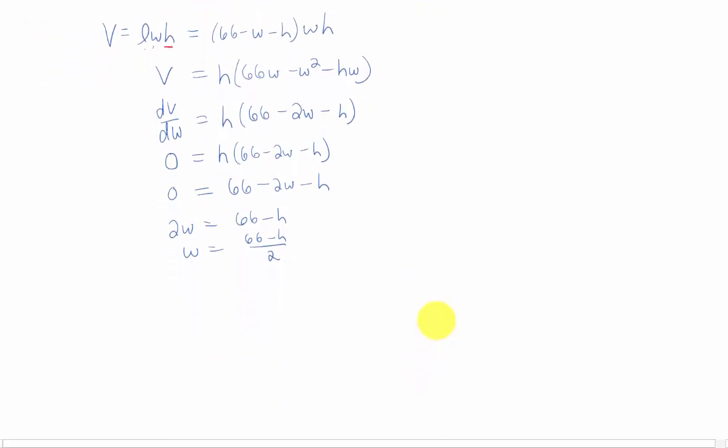To get what that volume is, we have to take this w, which is 66 minus h over 2, and plug it in here and here.